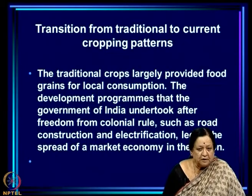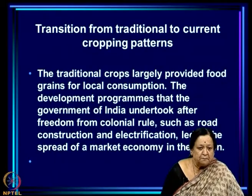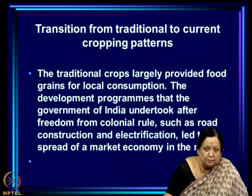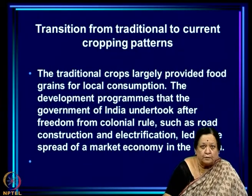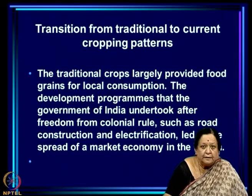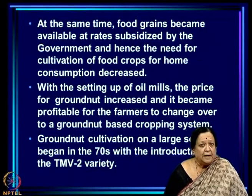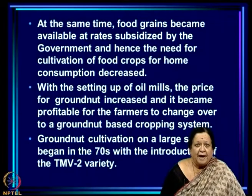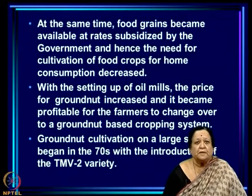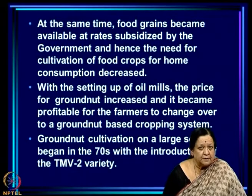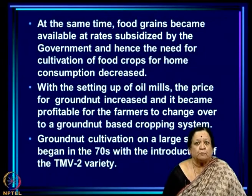How did the transition occur from the traditional to the current cropping pattern, which comprises primarily groundnut? The traditional crops largely provided food grains for local consumption. Development programs undertaken by the Government of India after independence — such as road construction and electrification — led to the spread of a market economy. At the same time, food grains became available at subsidized rates in ration shops, so the need for cultivating food crops for home consumption decreased.